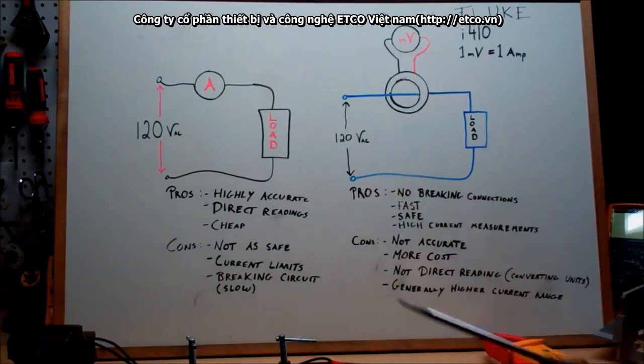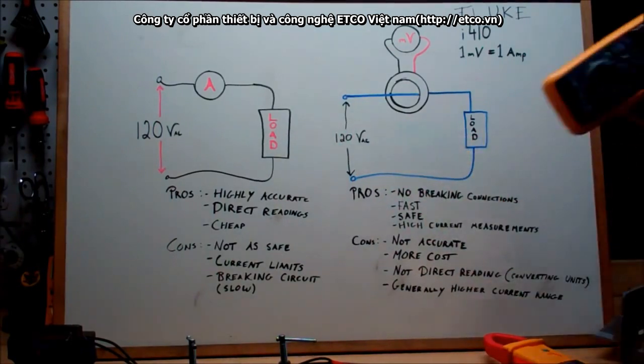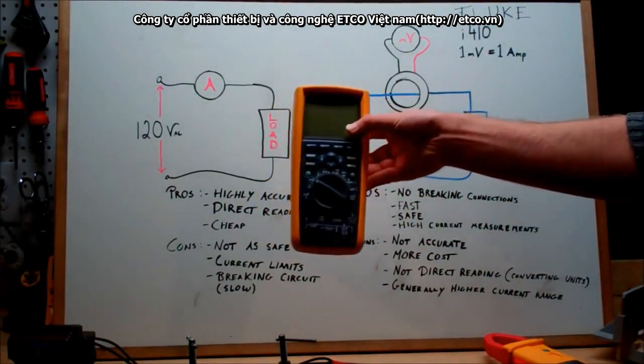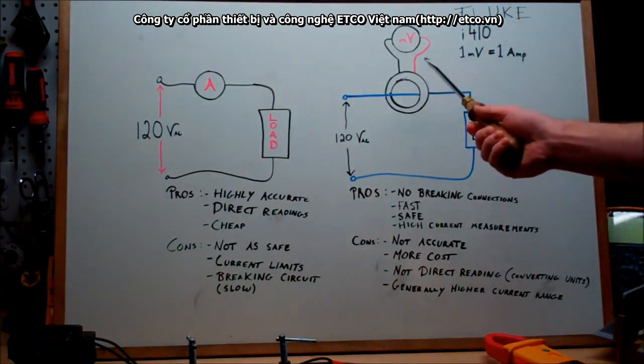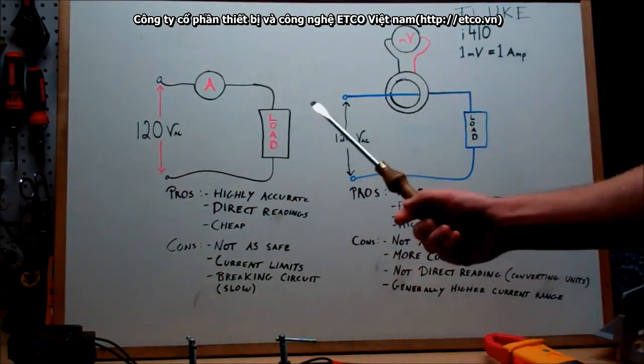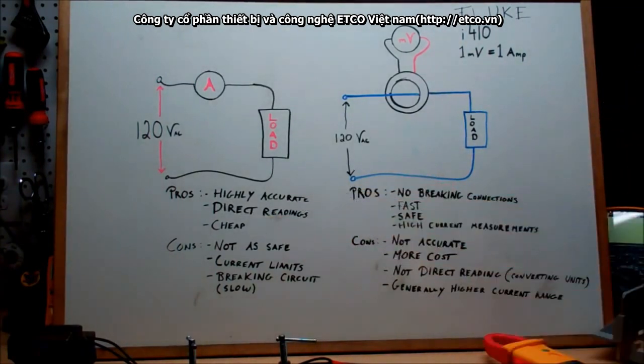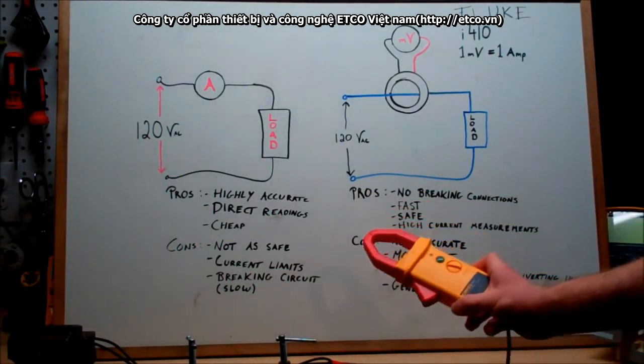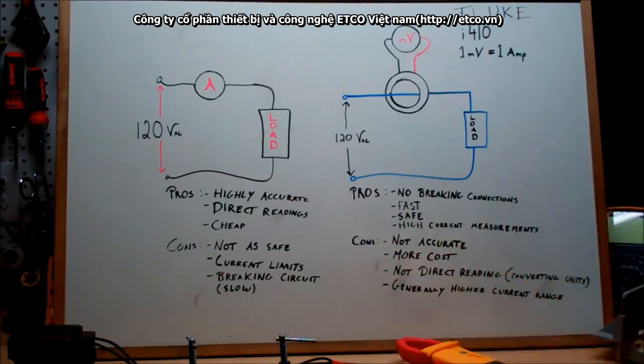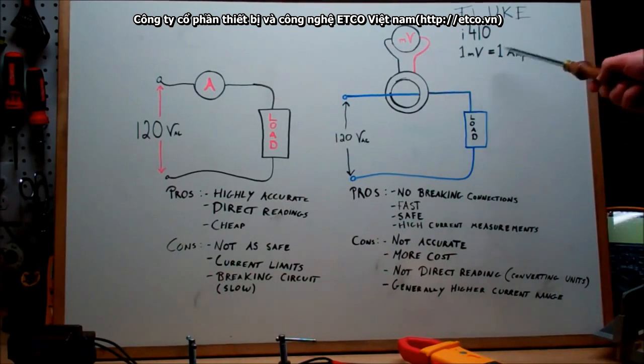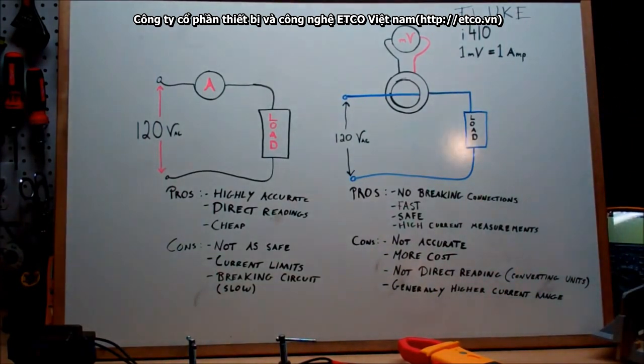First off, highly accurate. When you're using something like your Fluke 289 here, you get monstrous results for accuracy. Where if you use something like your current meter, your results aren't as accurate. Now you also get direct readings. And what I mean is when you're using a clamp meter, you don't have a direct current reading. You get a translation. And what I mean is you get millivolts. And for the current meter I'm using, 1 millivolt equals 1 amp. And that is a really nice friendly ratio to work with, but not all of them have that ratio. Next is the cheapness. This is a pretty decently cheap setup for high accuracy.